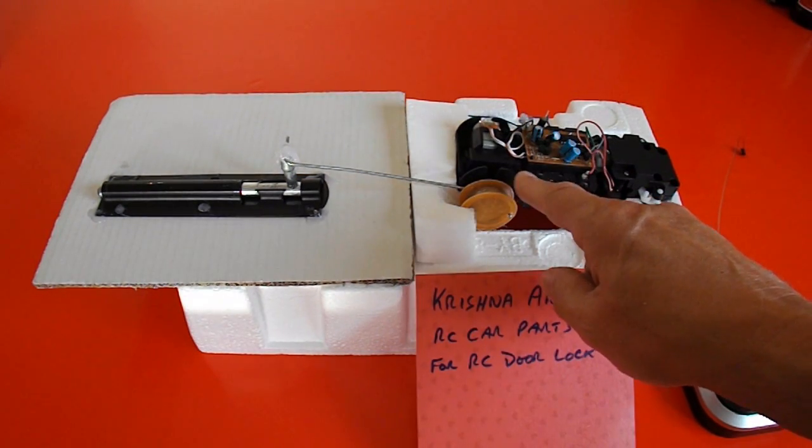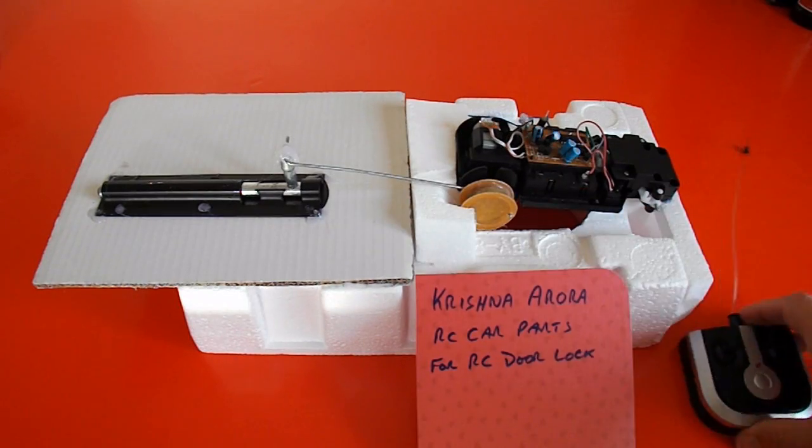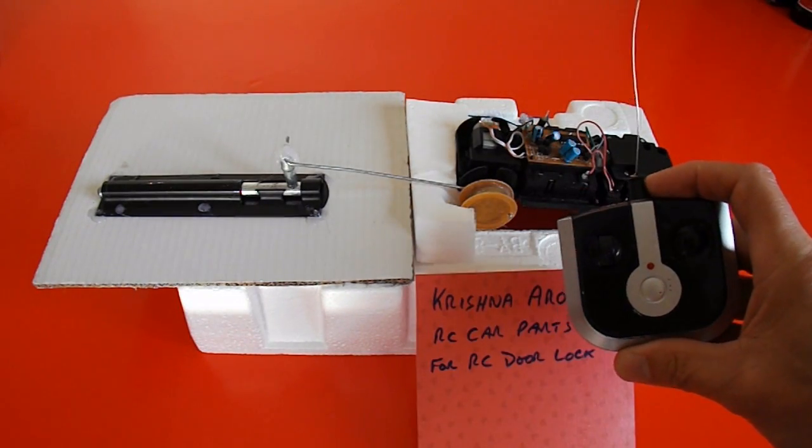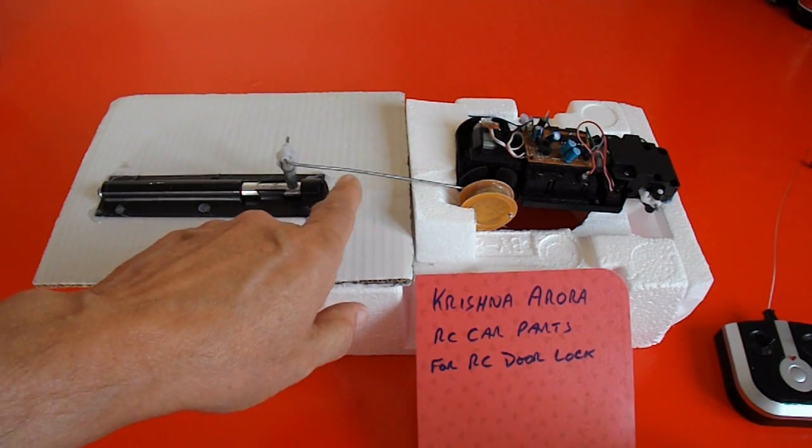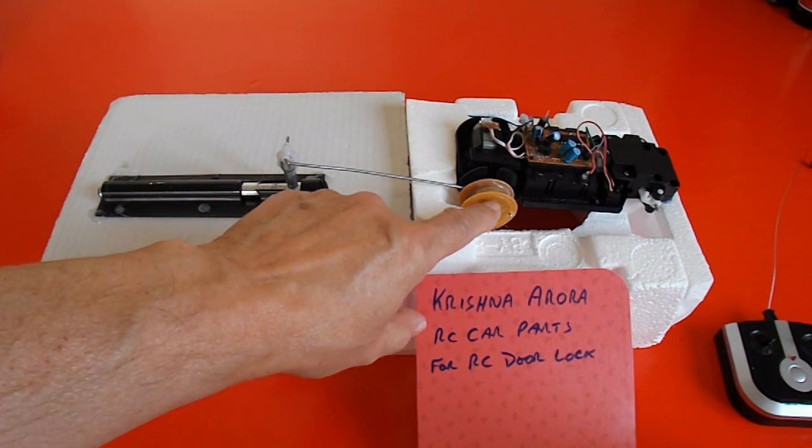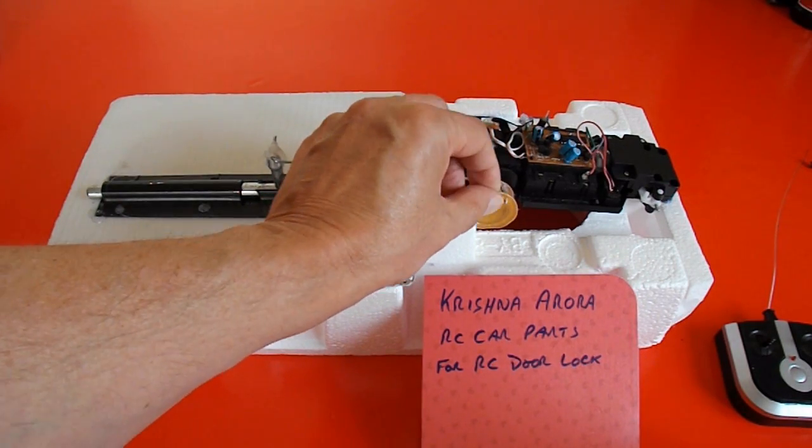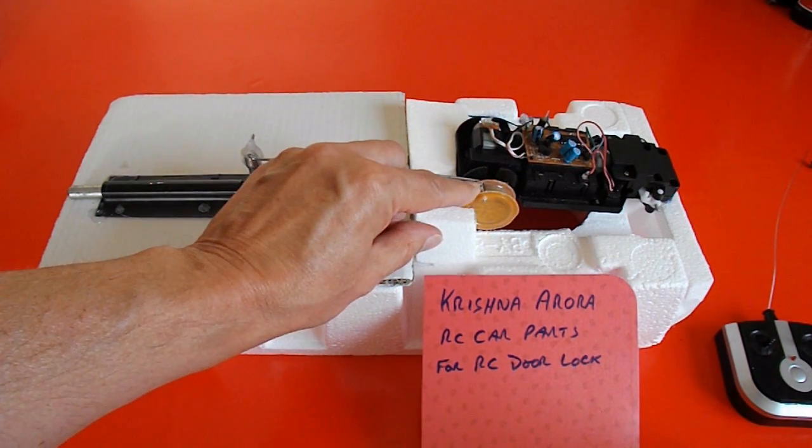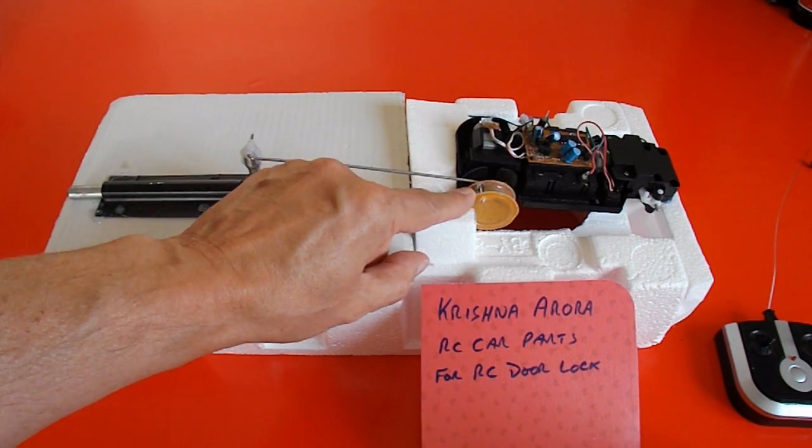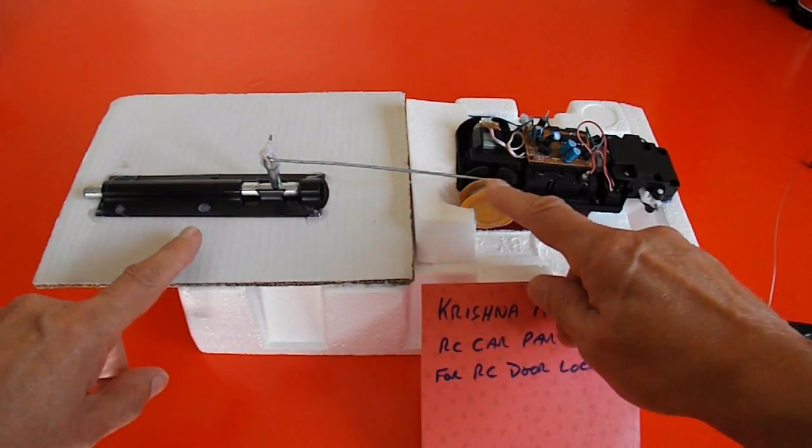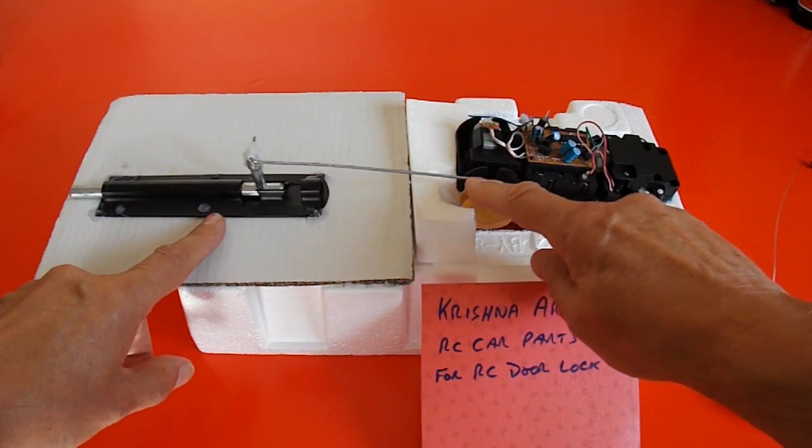So this is just a normal cheap radio controlled car that uses a simple controller. And all I've done is attached a metal rod to the back wheel. I'll do a close-up so we can see it in a minute. So when the wheel turns, it moves the bolt in and out.